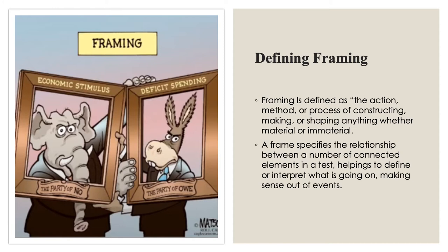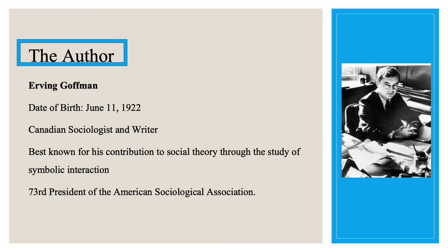You can see the Democratic Party — the donkey — and the Republican Party — the elephant — both holding frames up to one another. This shows that even in politics, framing is being done. The donkey is holding up a frame that says 'the party of no' regarding the Republicans, and the elephant is holding up a frame saying 'the party of oh' regarding the Democrats.